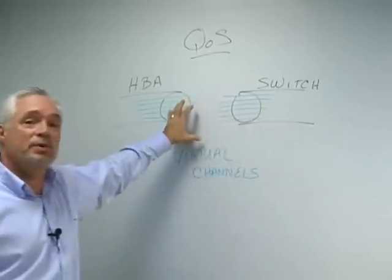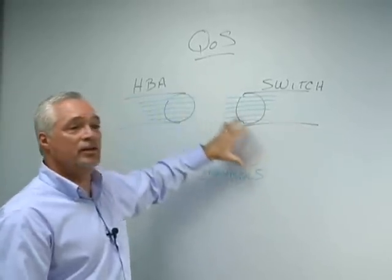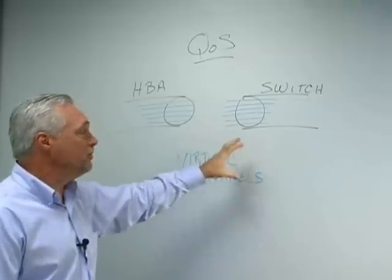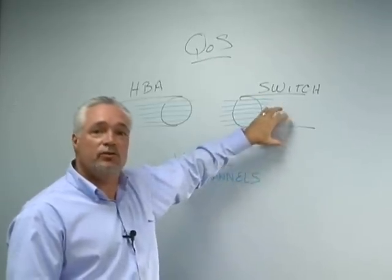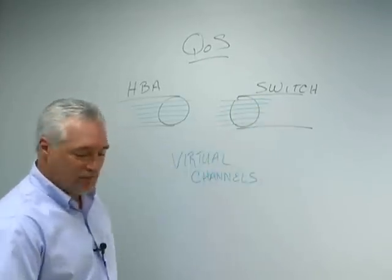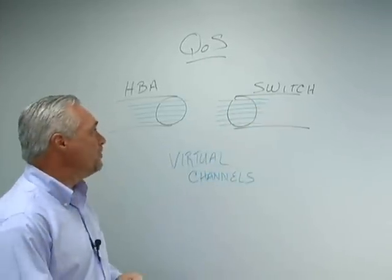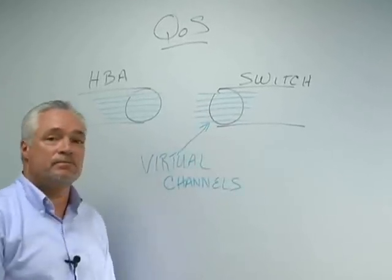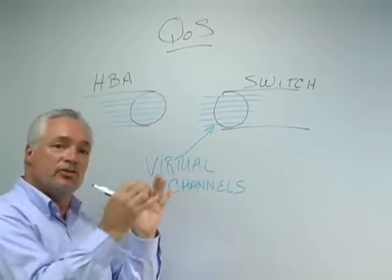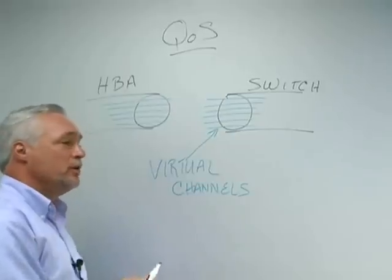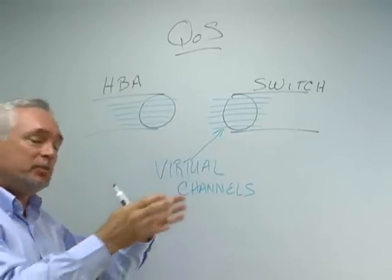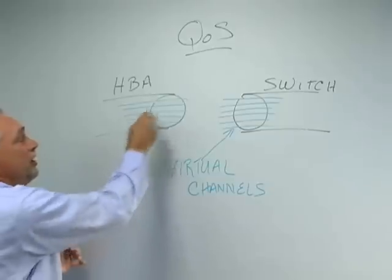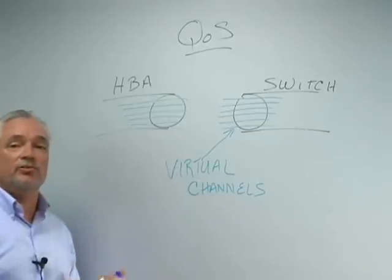If you look up here on the board, I'm going to show you what QoS looks like in a virtual environment. On the switch side, right here is this physical switch port. Inside this physical switch port we have what we call virtual channels. These are a bunch of channels inside a physical port. Since this technology has been implemented on our HBA side, we also have virtual channels on our physical HBA port.